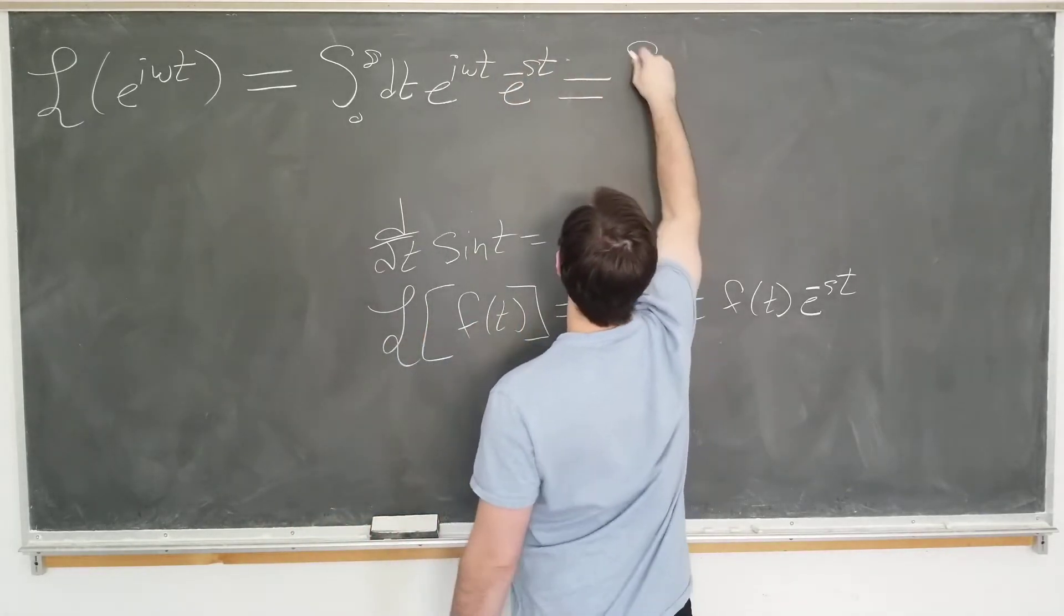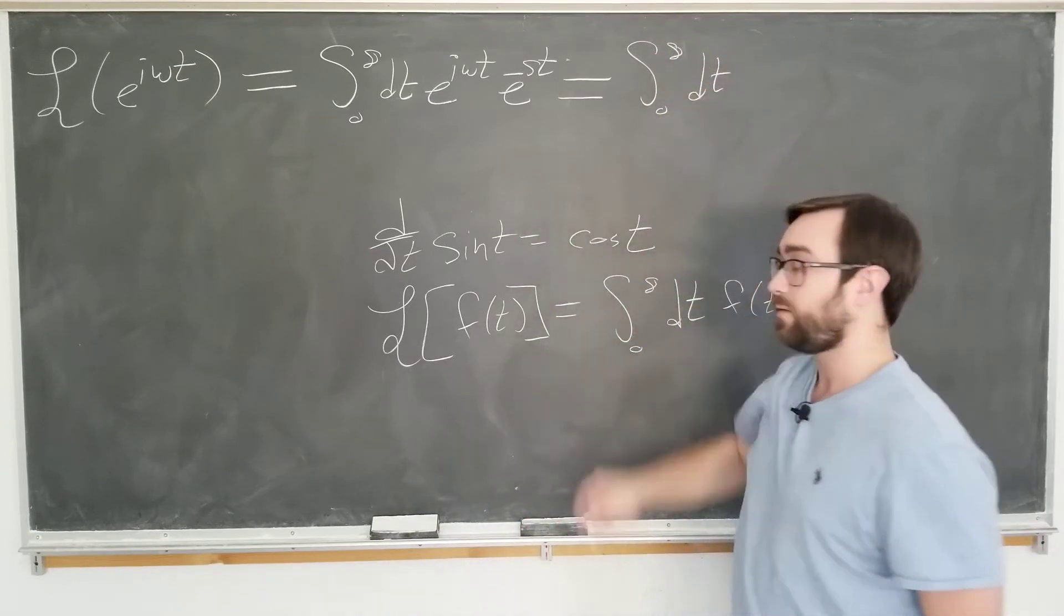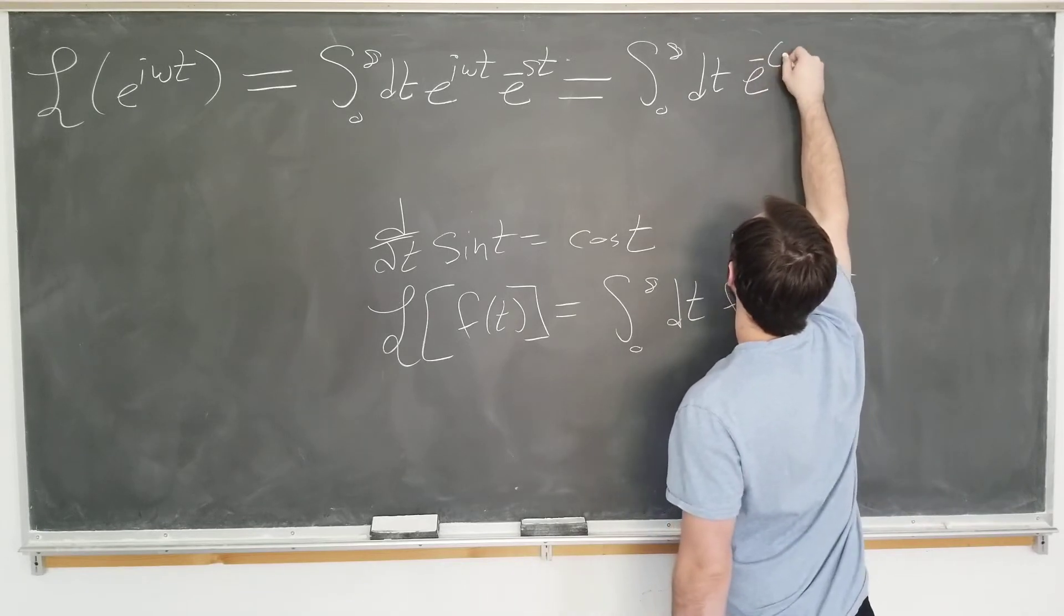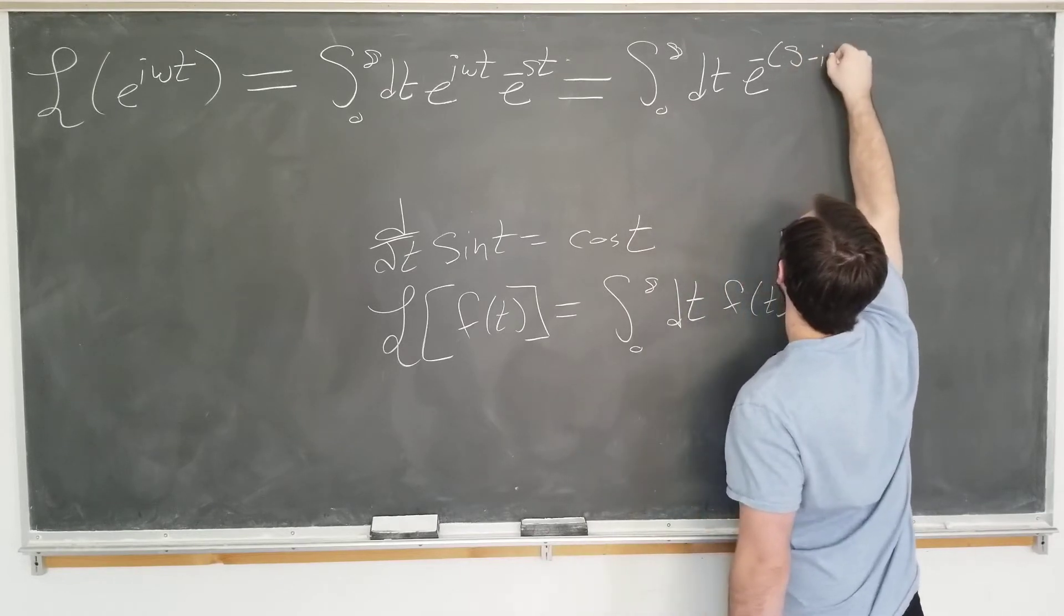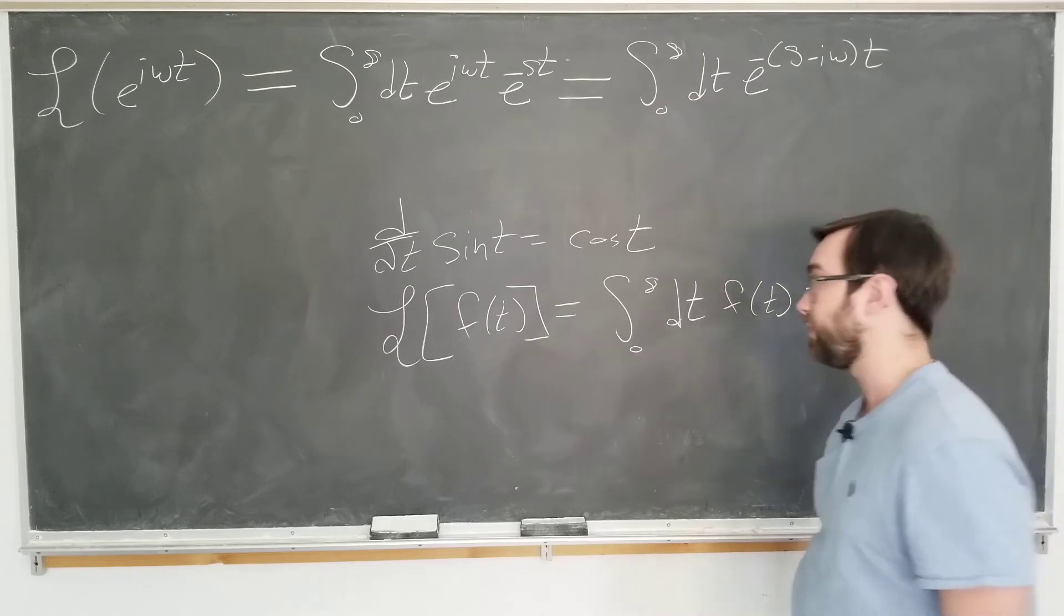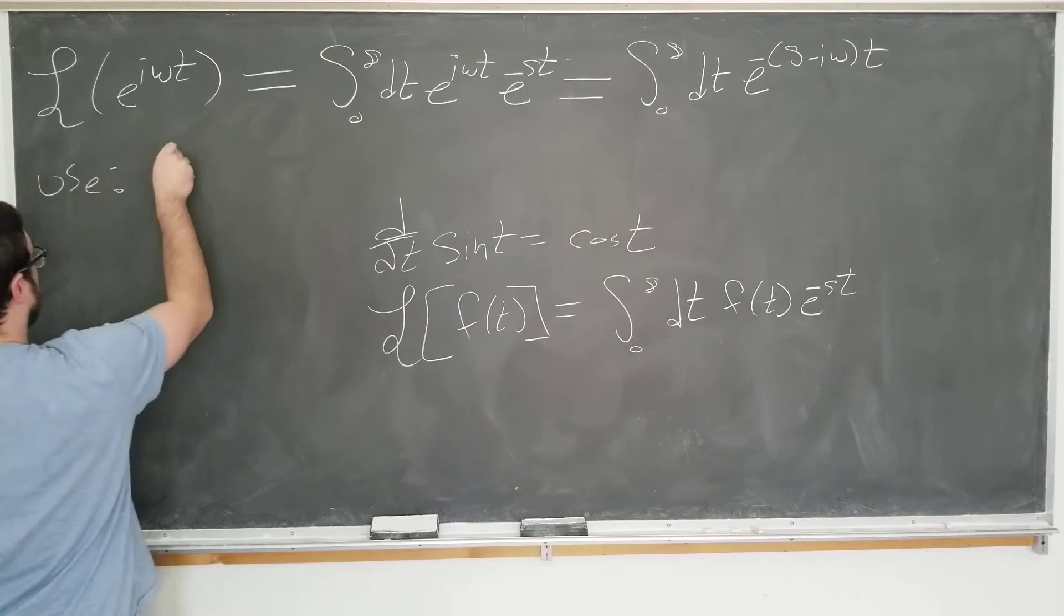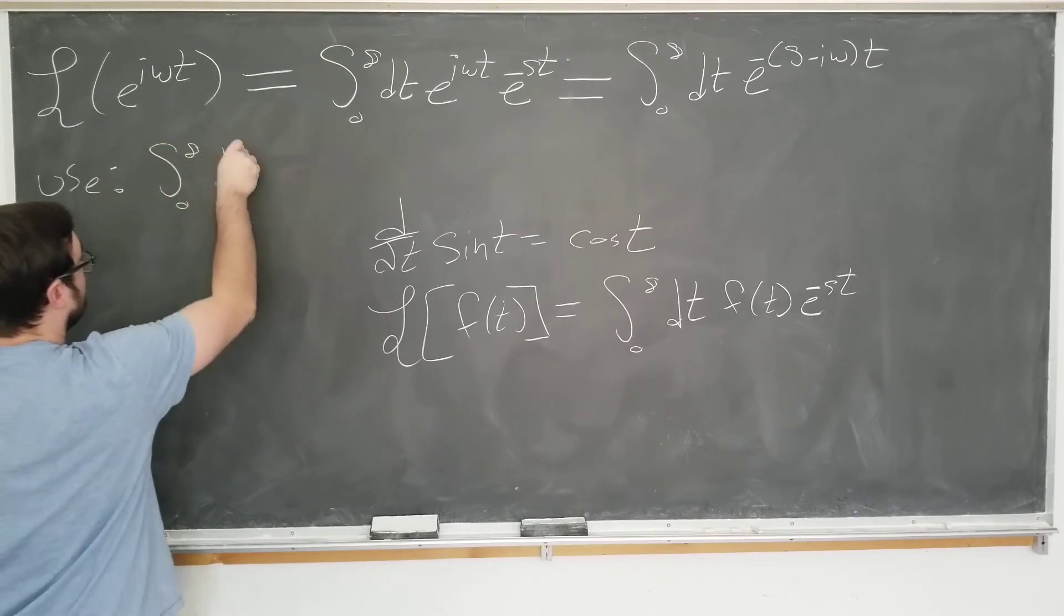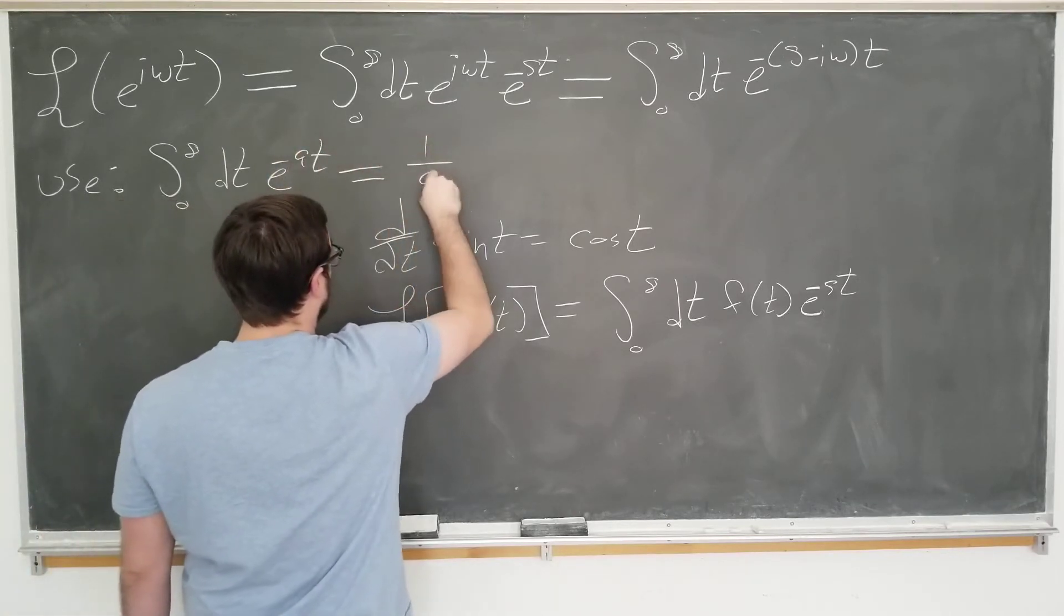And for reasons that will be clear in a moment, I'm going to factor out a minus sign in the exponential, e to the minus s minus i omega times t. And the reason I want to do this is because I'm going to use the formula that integral from zero to infinity dt of e to the minus a t is simply 1 over a.